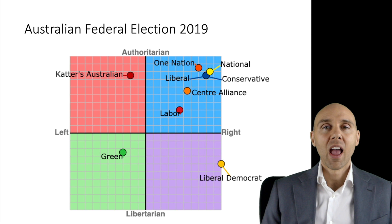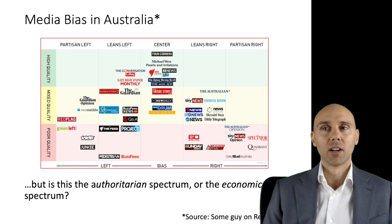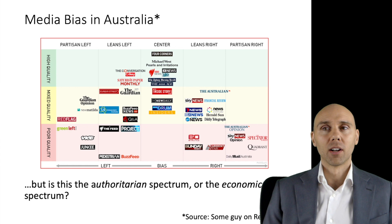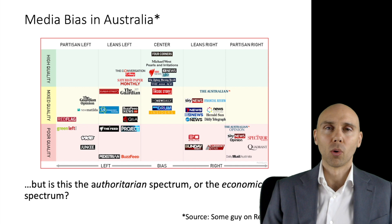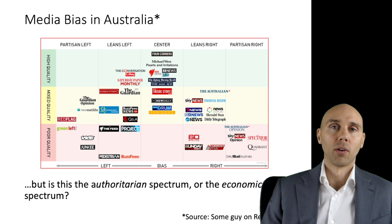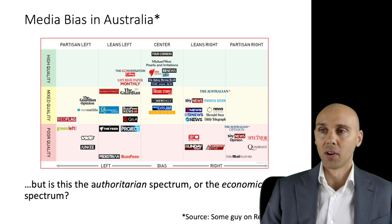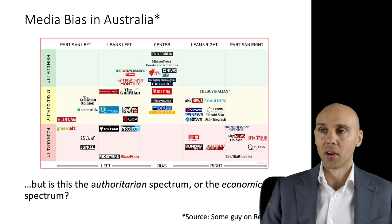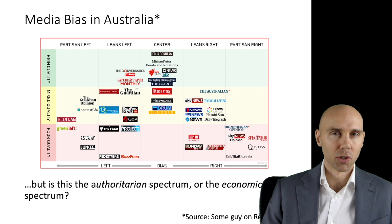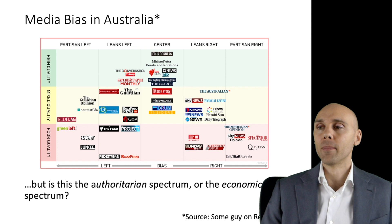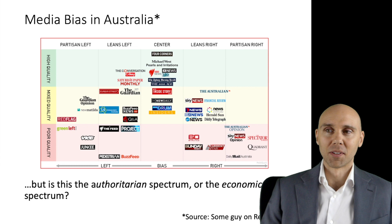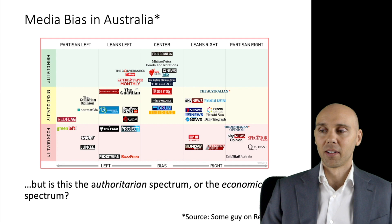We can also look at this in terms of media bias in Australia. This graph is useful for seeing why breaking things up into economics and personal freedom matters, because it just talks about left and right without distinguishing the authoritarian versus economic spectrum. The data was pulled from Reddit so reliability is uncertain. The only publication the lecturer has written for is The Conversation, which leans left according to this — probably true since most economists lean slightly left — and at least it's rated as high quality. The SBS and ABC News are placed as centre-leaning, which seems a bit too centrist, though they are high quality.